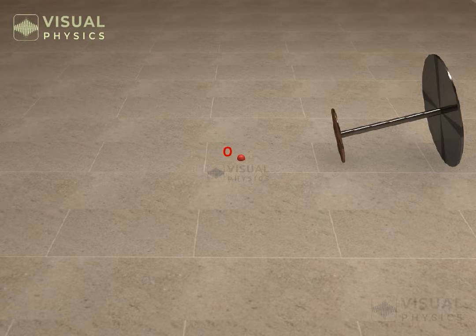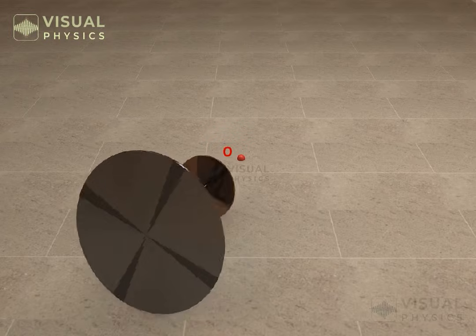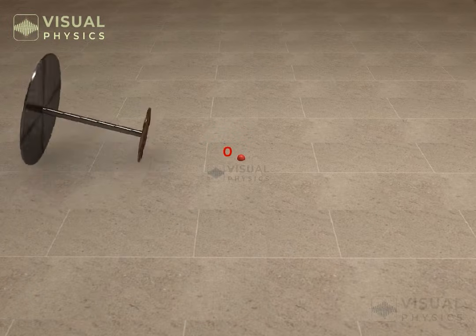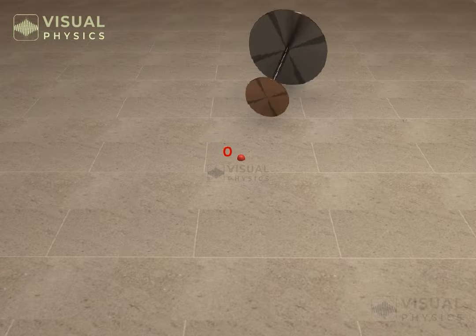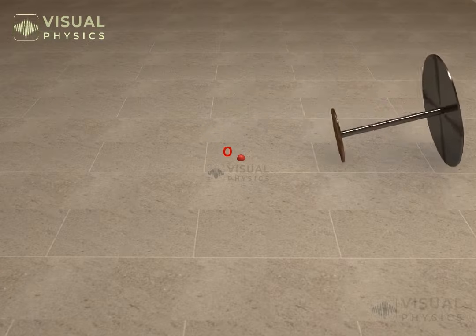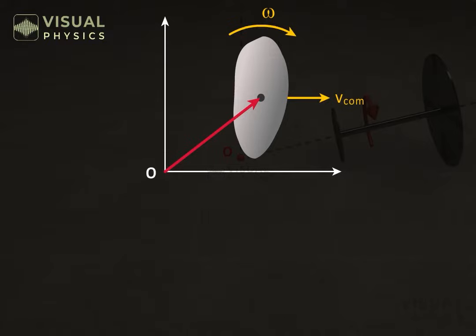The situation given to us will be as shown. Angular momentum of a rigid body with respect to some point in space is equal to the angular momentum of the body with respect to its center of mass, plus the angular momentum of the center of mass with respect to the point of concern.